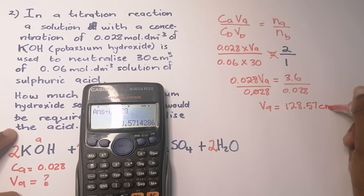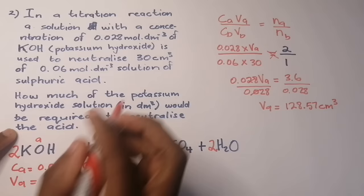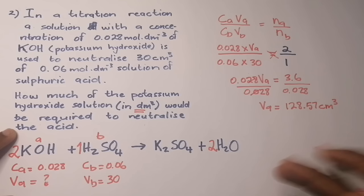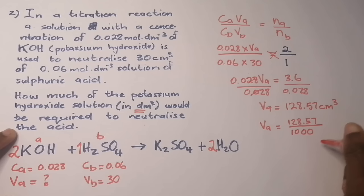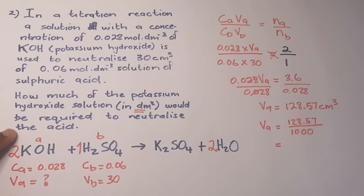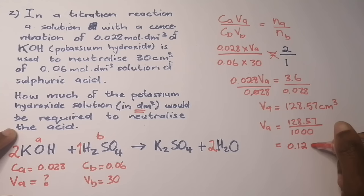The question asked for the volume in cubic decimeters. To convert from cm³ to dm³, divide by 1000: 128.57 / 1000 = 0.129 dm³. That's our volume value.